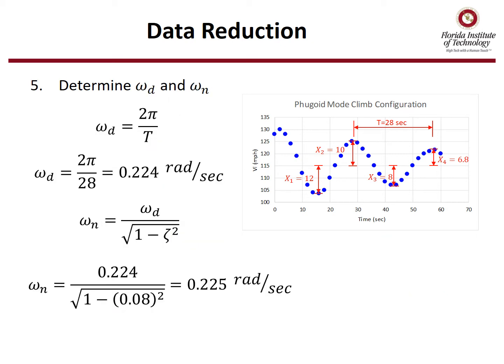Step five is to determine the damp frequency, omega d, and the natural frequency, omega n. The damp frequency, omega d, is just 2 pi over the period. For this example, it's 2 pi over 28, or 0.224 radians per second. The natural frequency, or omega n, is calculated using the damp frequency of 0.224 and then divided by the square root of 1 minus the damping ratio from the previous slide of 0.08 squared. In this case, the natural frequency is 0.225. The natural frequency will always be greater than the damp frequency.